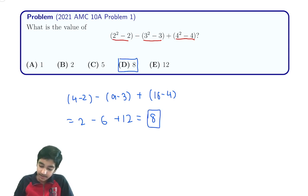There's another way to do this. You can factor each term: 2² - 2 = 2(2 - 1), 3² - 3 = 3(3 - 1), and 4² - 4 = 4(4 - 1). This equals 2(1), which is 2